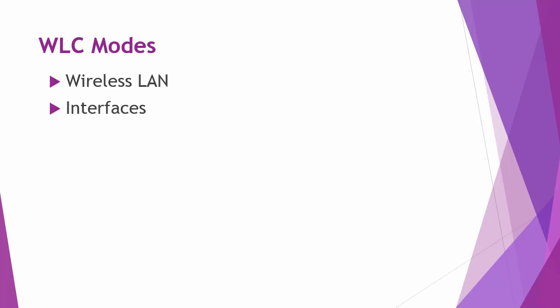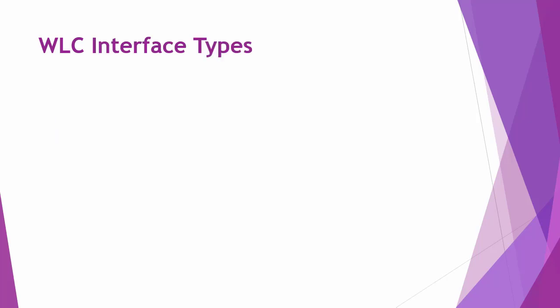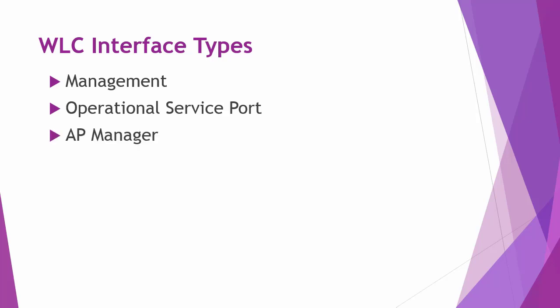Wireless LAN controllers have three components: wireless LANs, interfaces, and ports. The wireless LAN is the SSID network name; every wireless LAN is assigned to an interface in the WLC and configured with policies for RF, QoS, and other LAN attributes. Interfaces are logical connections that map to a VLAN on the wired network, each configured with a unique IP address, default gateway, and physical ports. WLCs support five interface types: the management interface for in-band management or AAA server connectivity; an optional service port interface for out-of-band management; the access point manager interface for layer 3 discovery and association; dynamic interfaces for wireless LAN client data VLANs; and virtual interfaces for layer 3 security authentication, DHCP relay, and mobility feature management.